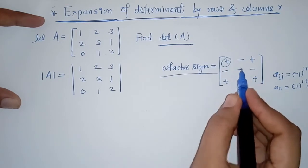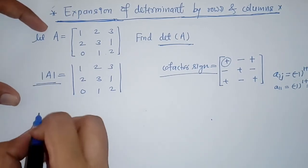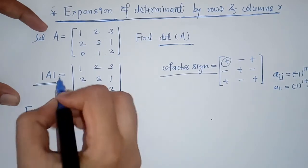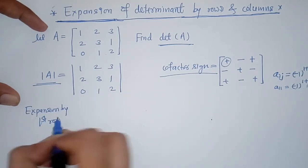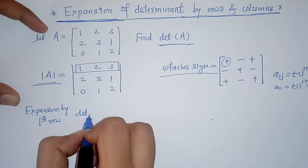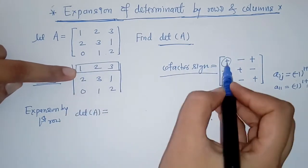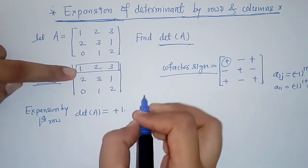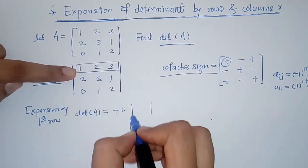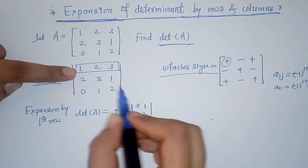By using this sign matrix, we will expand the determinant of A by the first row. The first element is 1 and its sign is plus, so we write plus 1 times its minor. The minor is obtained by avoiding the row and column in which this element lies, giving us the remaining elements 3, 1, 1, 2.